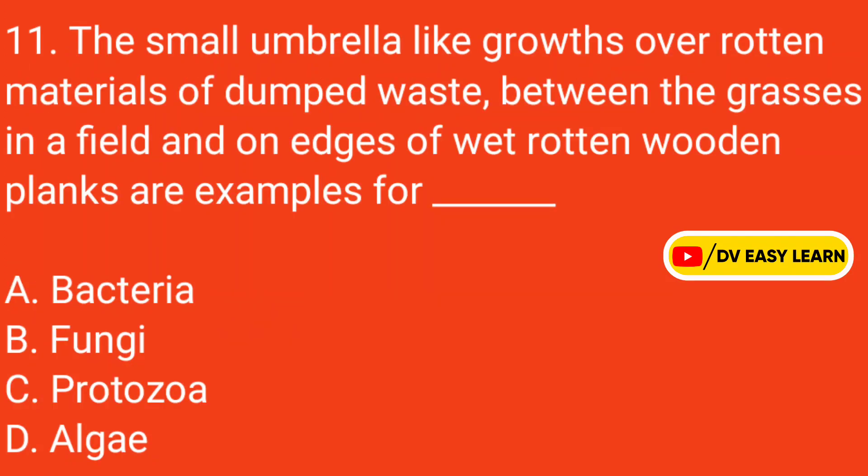Question 11: The small umbrella-like growths over rotten materials of dumped waste, between the grasses in a field, and on edges of wet rotten wood planks are examples for —